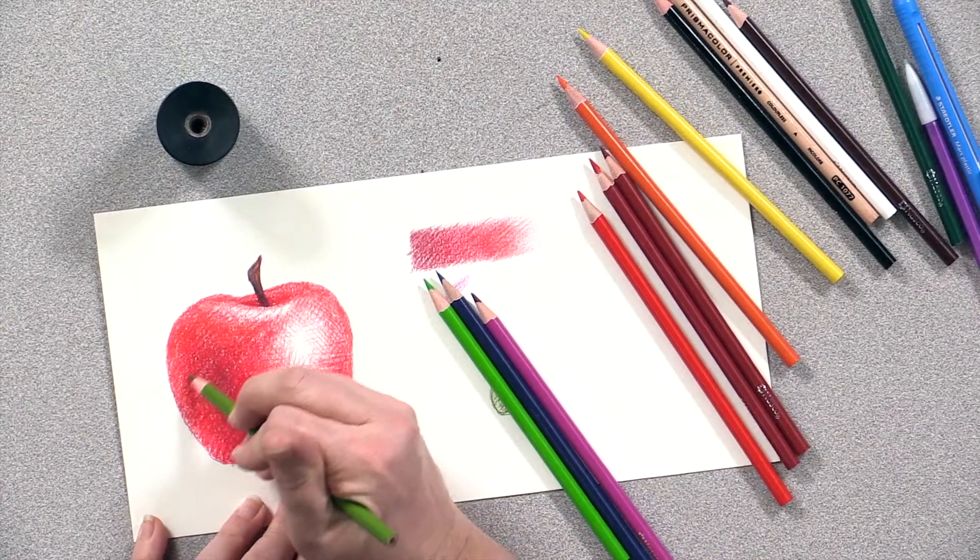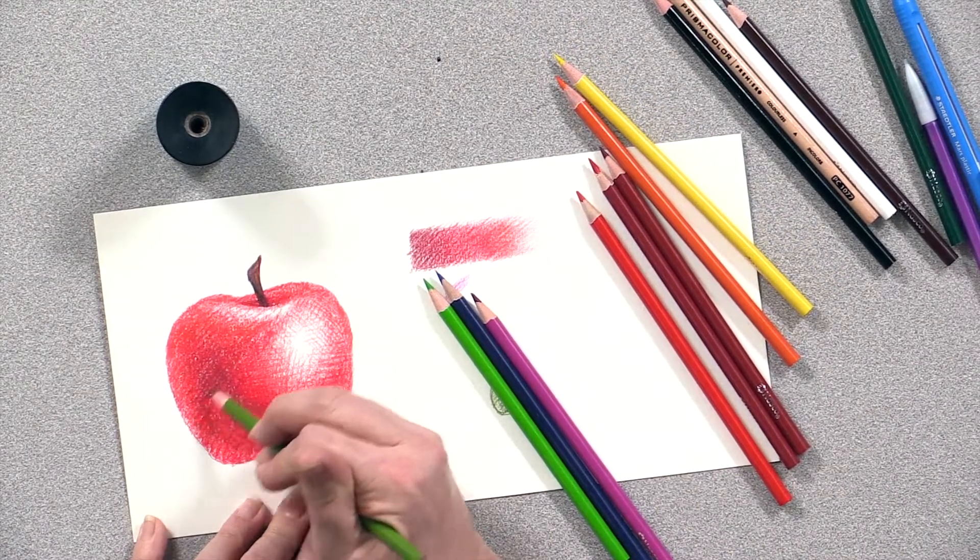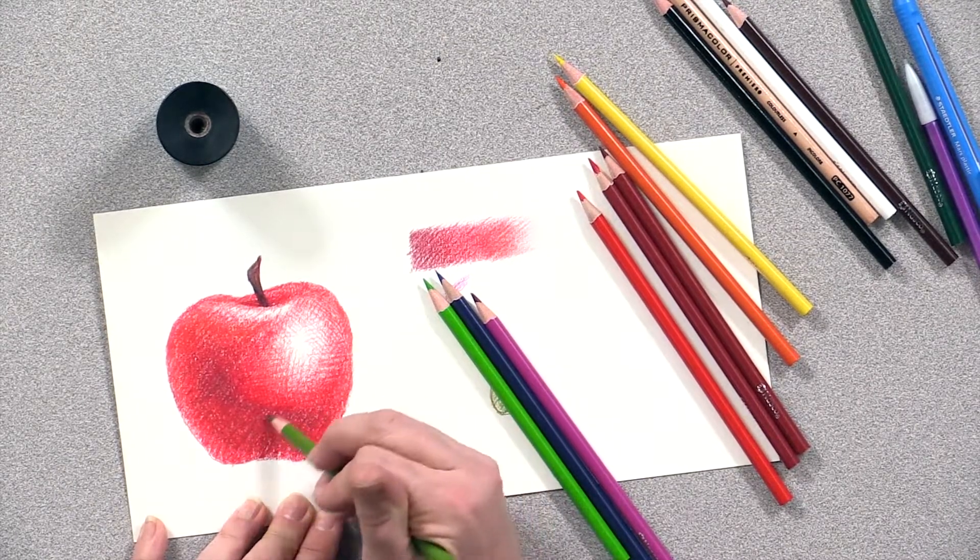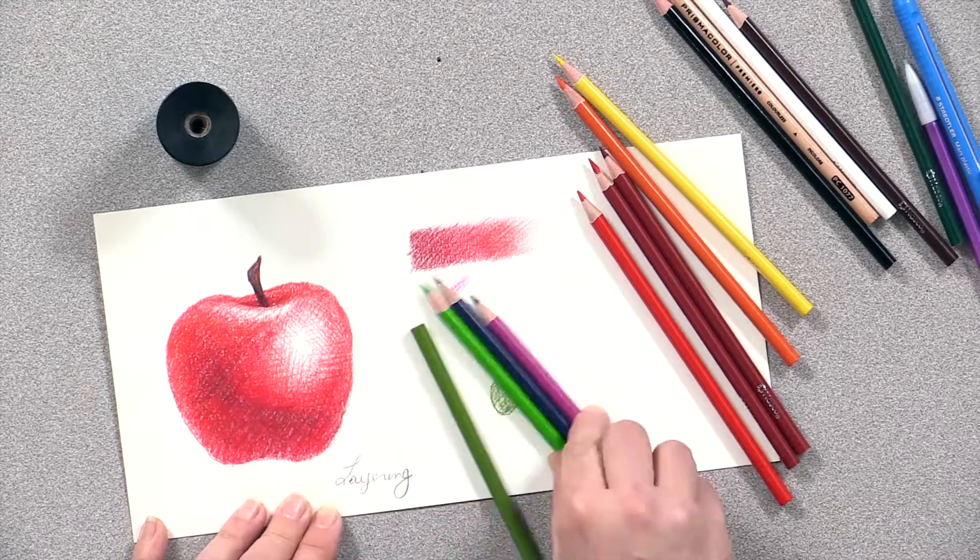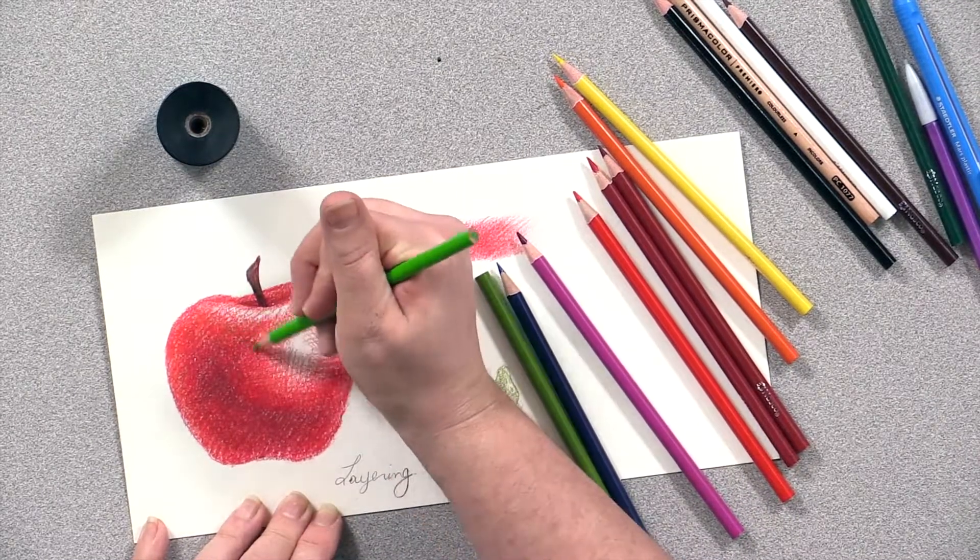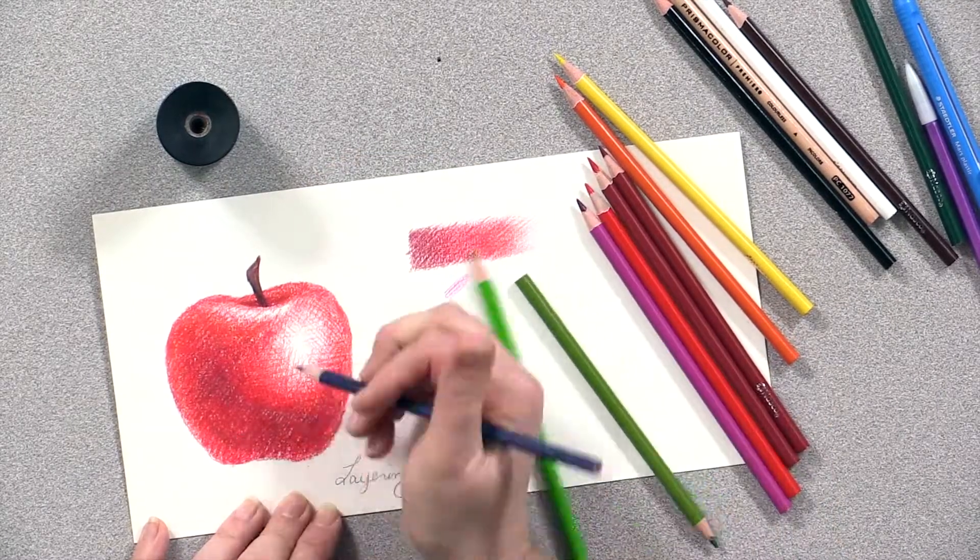If you go in and do this and you're like, oh my gosh, it's way too green, the easy fix is to come back in on top of it with the red. I've already burnished my apple quite a bit, meaning that I pushed with my colored pencil quite a bit already. So it's not going to take a ton of color from my green, and that's okay. I'm still going to go in and practice and play with those colors.